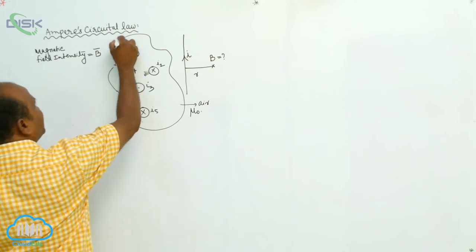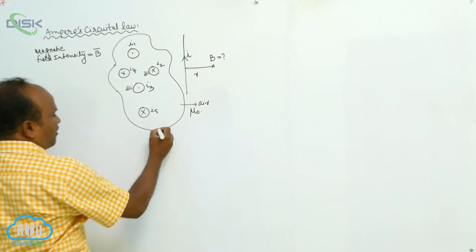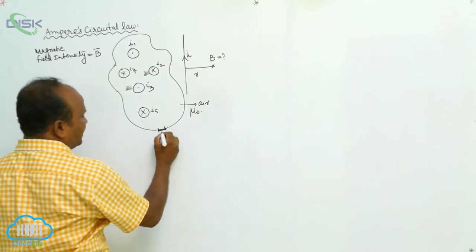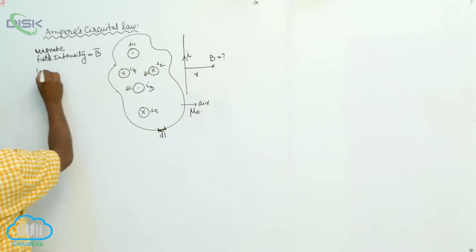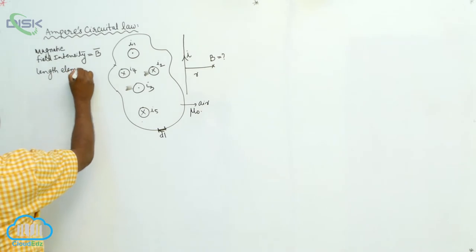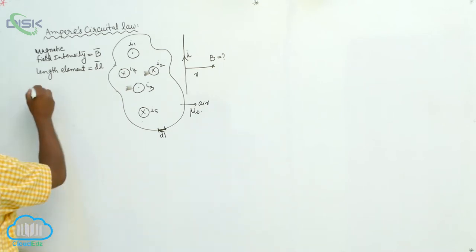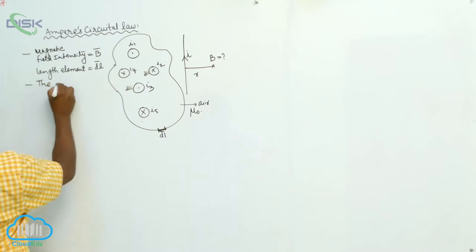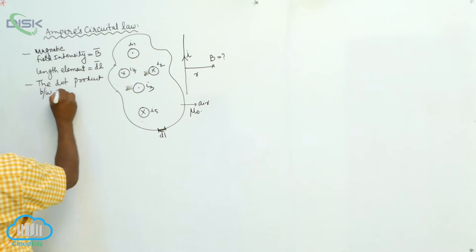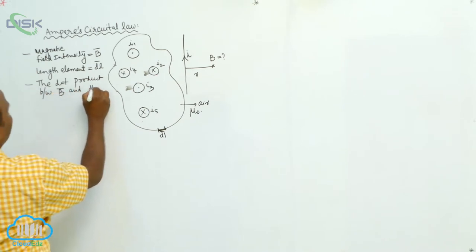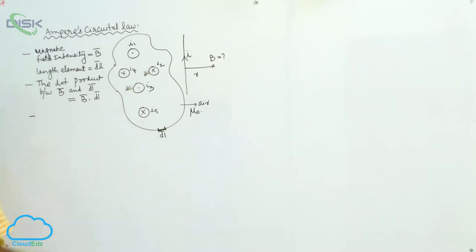The arbitrary path has a particular length. A small length element is called dL̄. That is, the length element dL̄. The dot product between B̄ and dL̄ is B̄·dL̄.